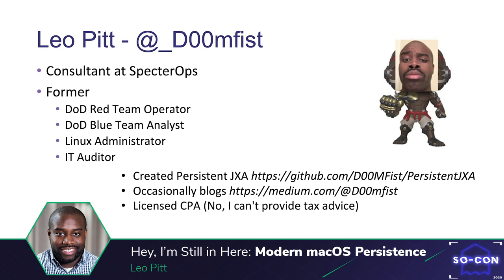I created Persistence JXA, which is a project that focuses on macOS persistence using JavaScript for Automation. It also includes other tools like a process injection checker and a dylib hijack scanner. I occasionally blog on Medium. I am also a licensed CPA, but I cannot provide tax advice — and if you're coming to me for tax advice, you're already going down the wrong path.